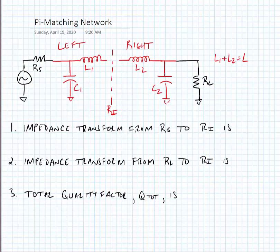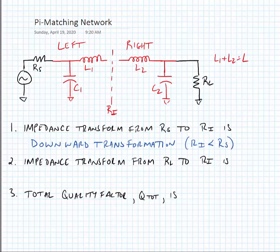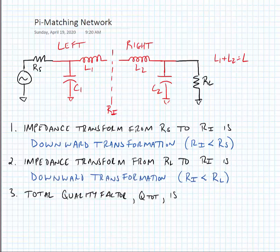We have a left network consisting of RS, C1, and L1, and a right network consisting of L2, C2, and RL, where L1 plus L2 equals the original L. The impedance transformation from RS to the intermediate impedance RI is a downward transformation — RI is less than RS. Similarly, the transformation from RL to RI is also a downward transformation, meaning RI is less than RL, with C2 shunt with RL and L2 in series with RI.